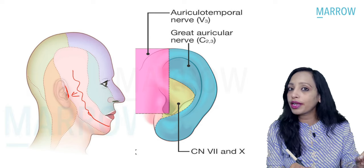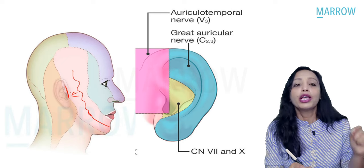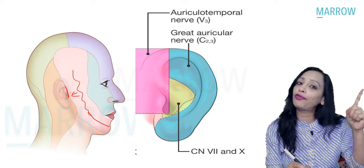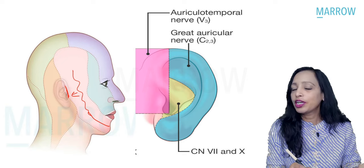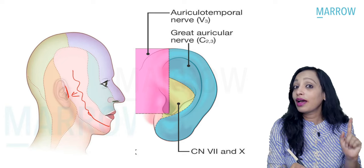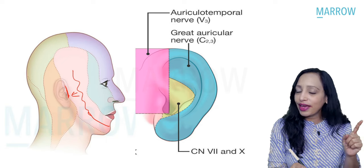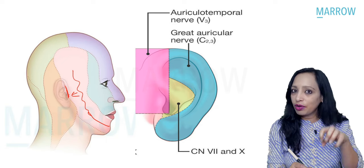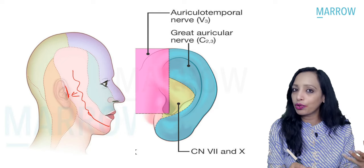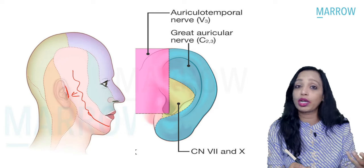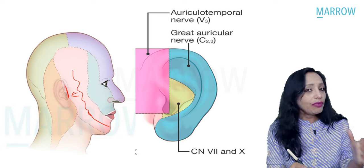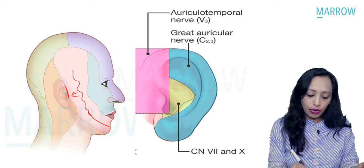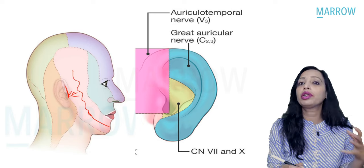The pain referred via the auriculotemporal nerve goes to the adjacent part of the pinna — that is the tragus and the anterior part of the helix. It also goes to the external auditory canal and the tympanic membrane. A recent question asked: carcinoma of the base of tongue — pain referred to the ear through which nerve? If it is base of tongue, the answer is glossopharyngeal; if it is carcinoma of the anterior two-thirds of tongue, it is referred through the auriculotemporal, lingual, or mandibular nerve.